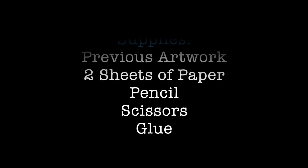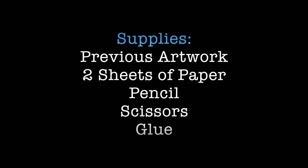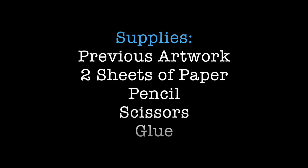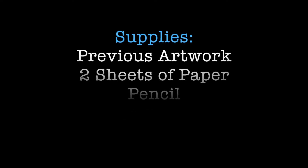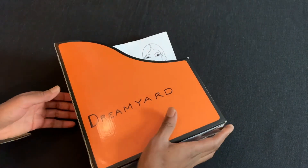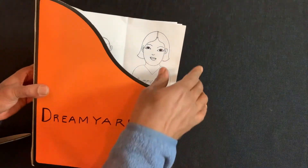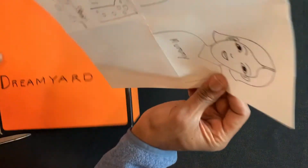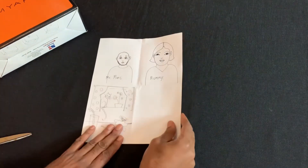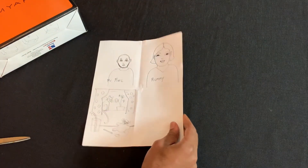For today's lesson, you'll need your previous artwork — that's your artwork that you did last week — two sheets of paper, pencil, scissors, and some glue. You'll need your artwork from last week to complete this project. If you don't have it, try to complete the lesson before this one and then do this one afterwards.